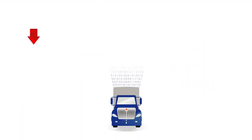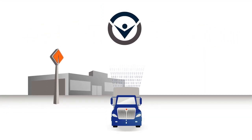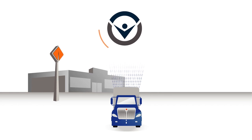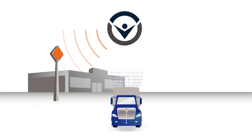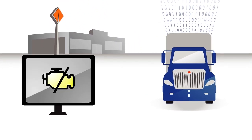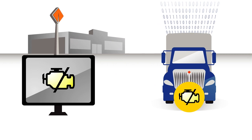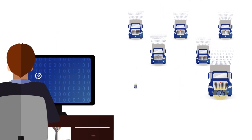By constantly monitoring vehicle data, On-Command Connection notifies customers and dealers when maintenance issues occur on a truck, sometimes before an engine light is activated or a driver detects an issue.